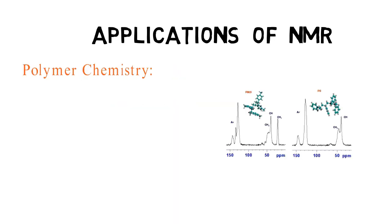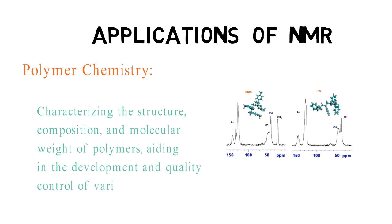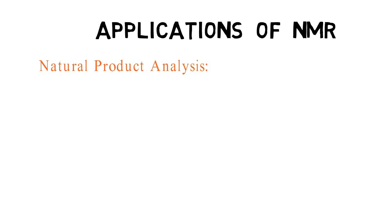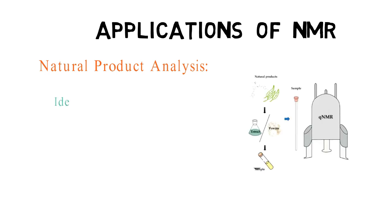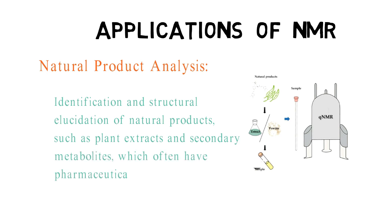NMR helps in characterizing the structure, composition, and molecular weight of polymers, aiding in the development and quality control of various plastics and synthetic materials. Nuclear magnetic resonance spectroscopy is also instrumental in the identification and structural elucidation of natural products, such as plant extracts and secondary metabolites, which often have pharmaceutical and biological significance.